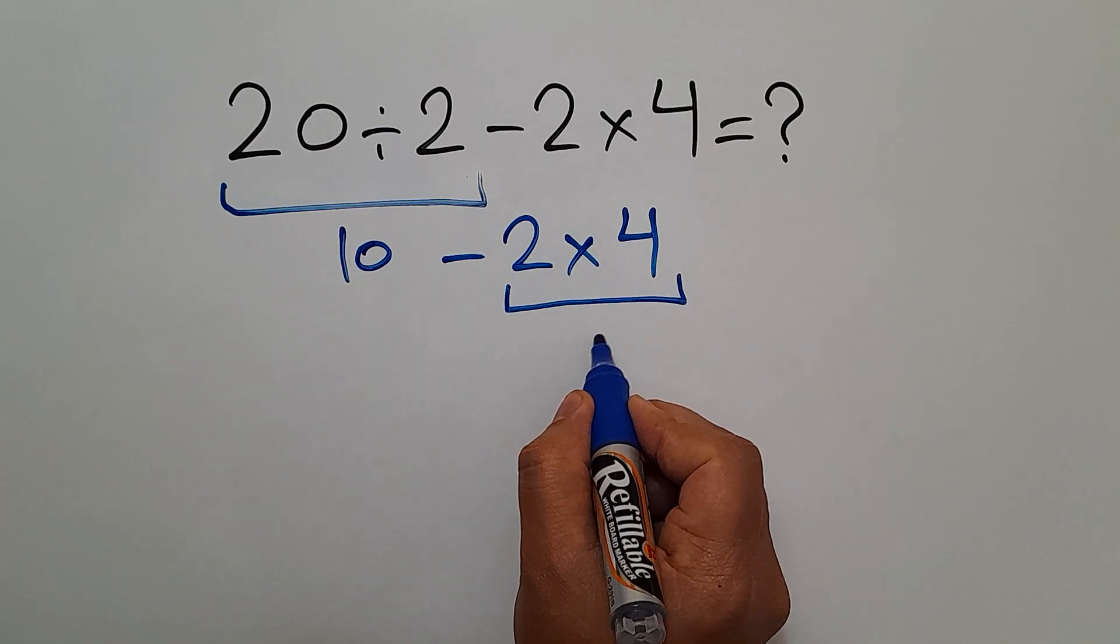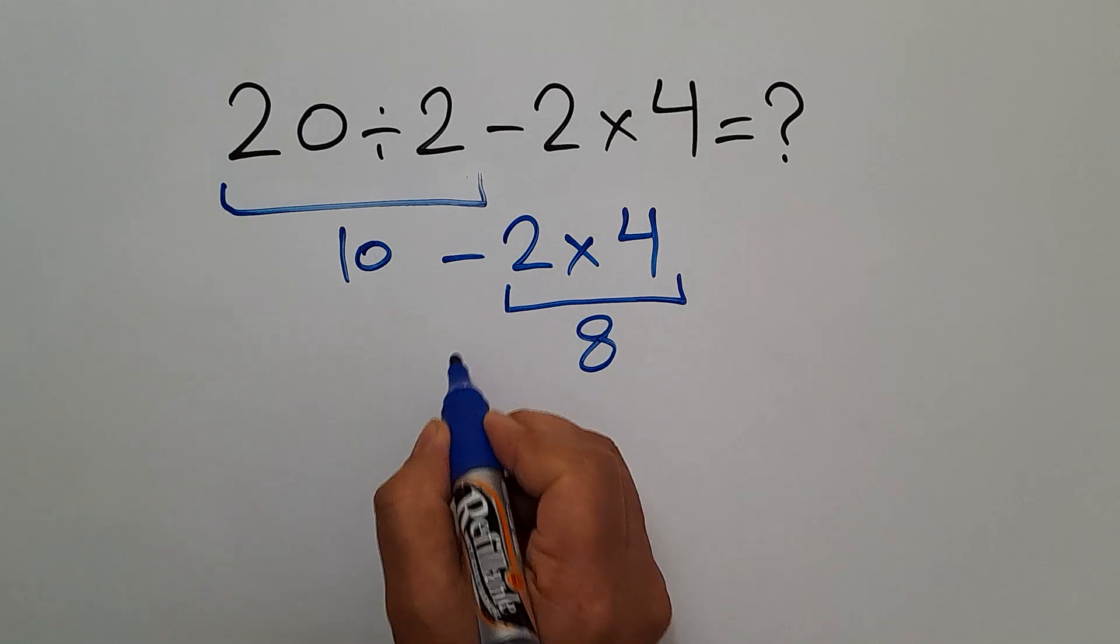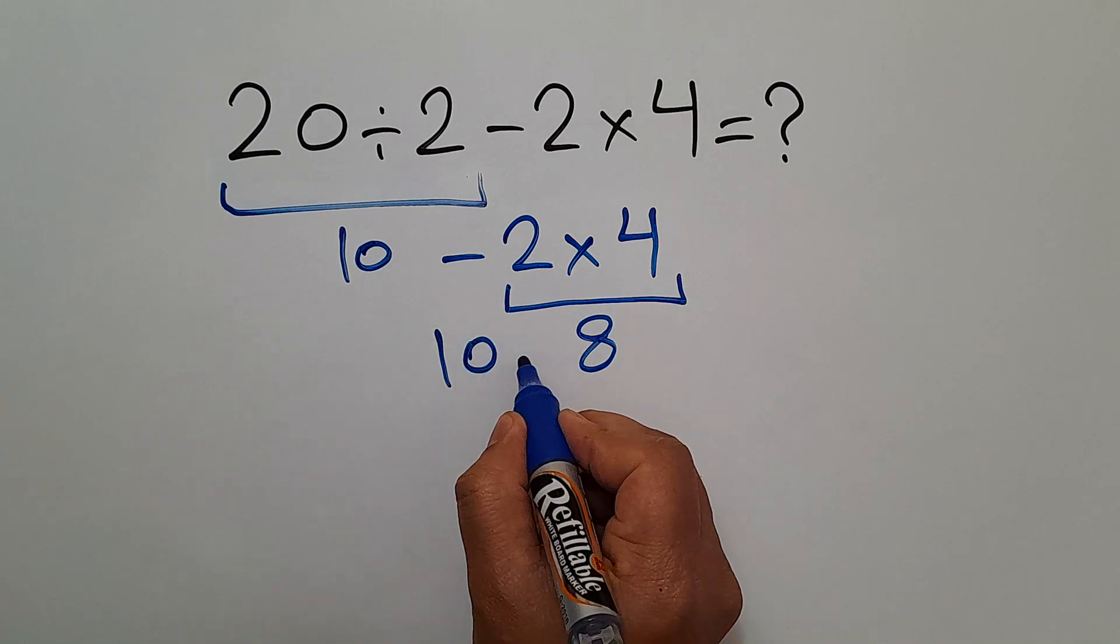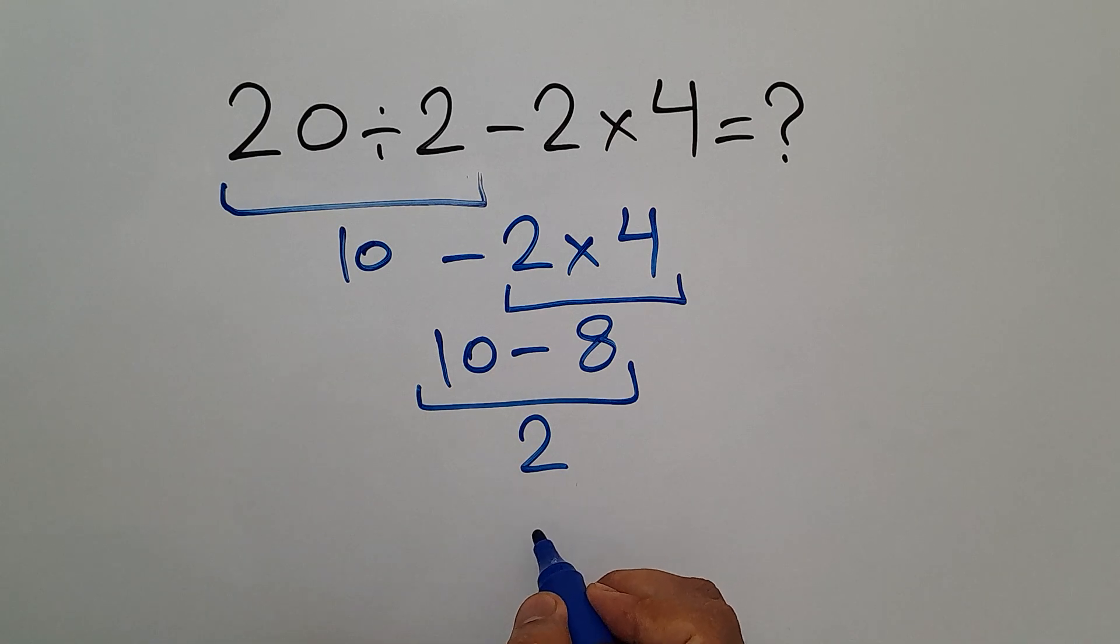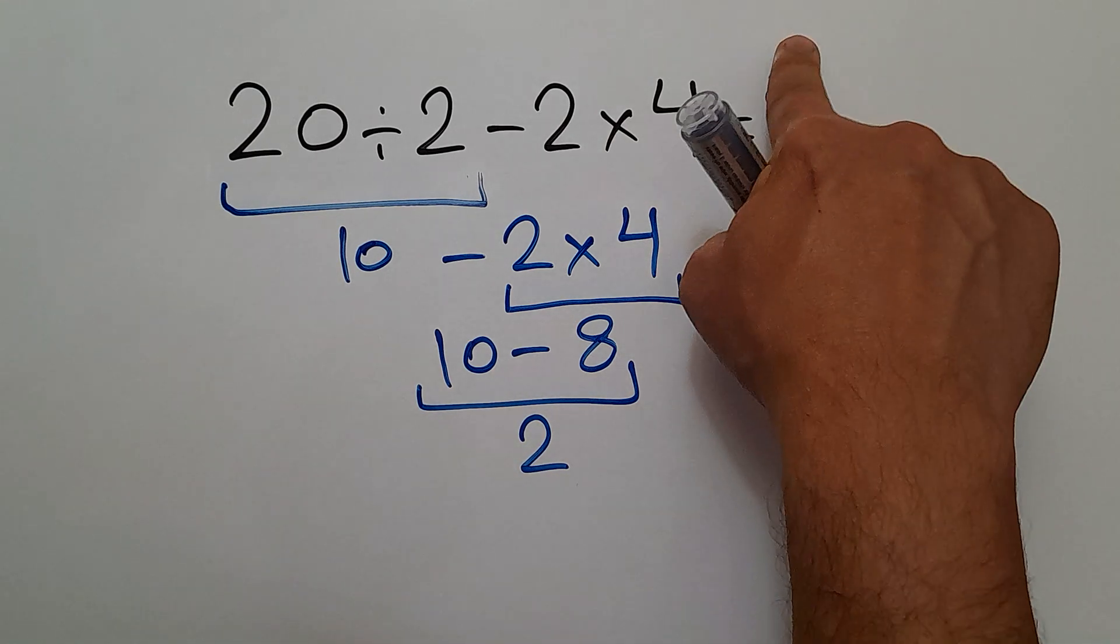2 times 4 gives us 8. So 10 minus 8, which equals 2. So our final answer to this problem is 2.